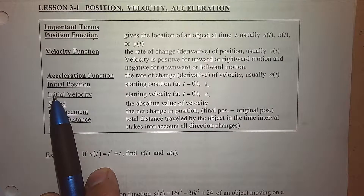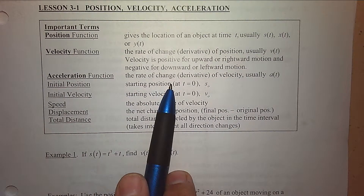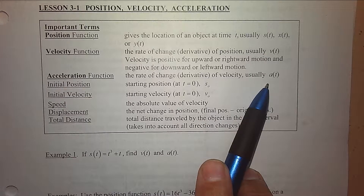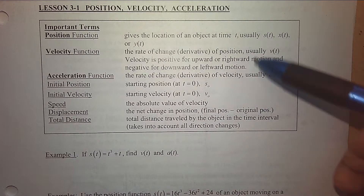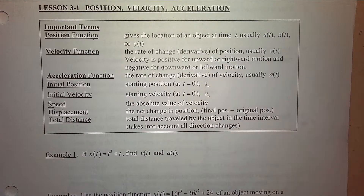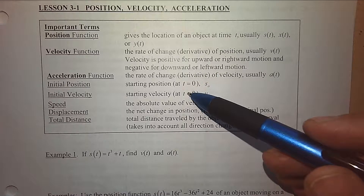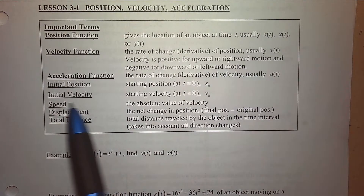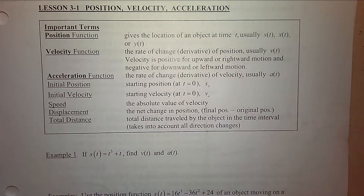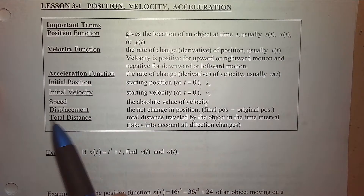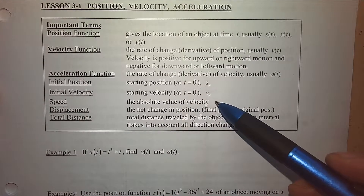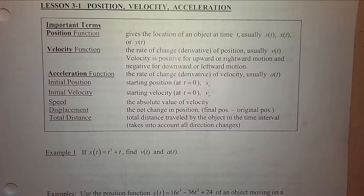Acceleration is the rate of change of the velocity with respect to time. When you hear 'rate of change,' do you see the connection to the word derivative? The initial position is when you plug in 0 for t. The initial velocity is when you plug in 0 for t after you find the velocity function. Speed is the absolute value of velocity — velocity can be positive or negative, but speed is only a positive number.